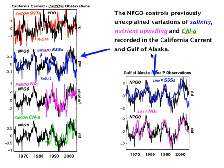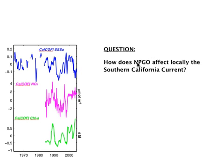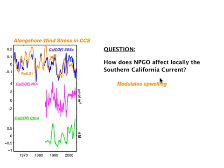Let's dig into the dynamics and ask how the NPGO affects locally the Southern California Current. The California Current is an upwelling system, so the primary candidate to explain the dynamics is changes in upwelling. To test this hypothesis, we take a time series of upwelling-favorable winds along the California Current. We find that the along-shore wind stress in the CCS is correlated very highly with salinity, suggesting that changes in upwelling are the driver for these low-frequency fluctuations of salinity, nutrients, etc.